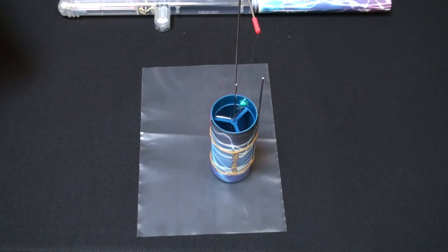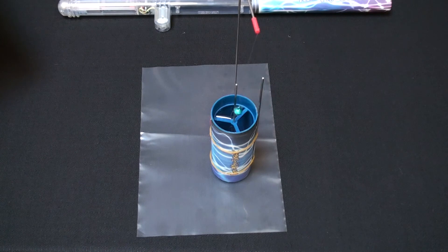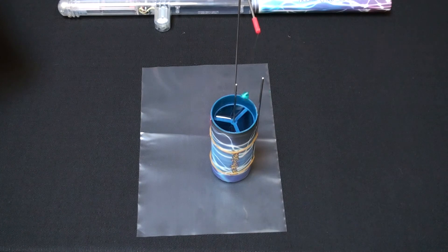The bead bounces between the two pins in a repeating manner, transferring charges from one pin to another. Eventually the charge on the pins becomes so low that it can no longer induce charge in the bead.